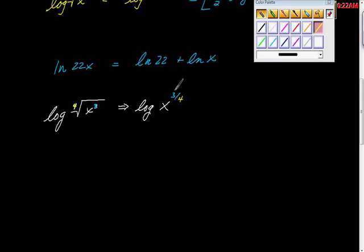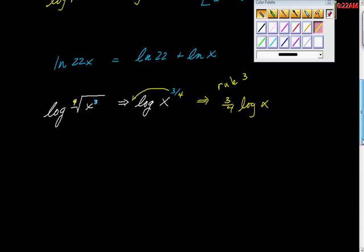And then from there, then we can simplify this by using rule number 3. So now we'll use rule 3. And what we're going to do is we're going to take this and we're going to roll this out in front of the log here. It becomes a coefficient there. So we would have 3 force log of x. So we're going to keep moving.